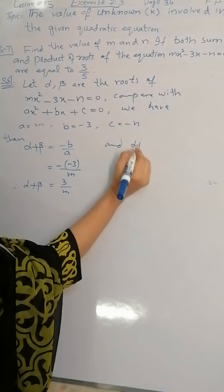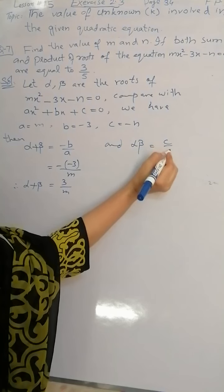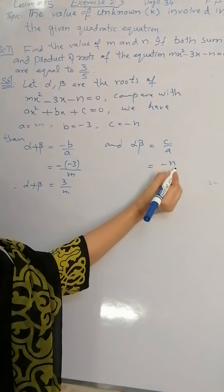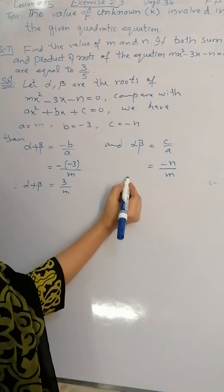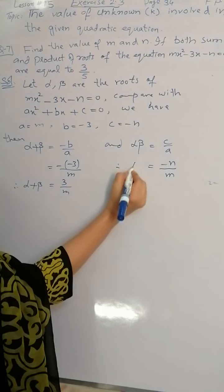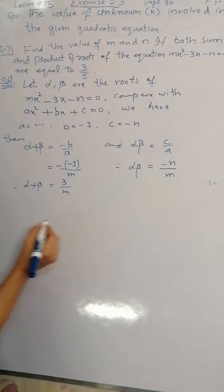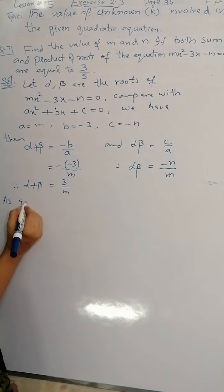Alpha into beta, which is equal to c/a. Here the value of c is -n and value of a is m. Therefore alpha beta is equal to -n/m. As the given condition is...